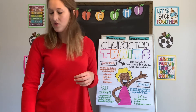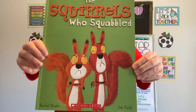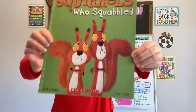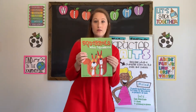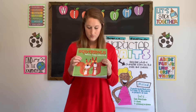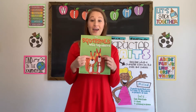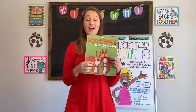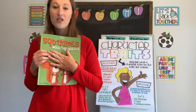Let's try the last one: The Squirrels Who Squabbled. Take a look at that. How could we describe their physical traits? They're red and orange. They have yellow eyes. They're tall. That's how we can describe how they physically look.